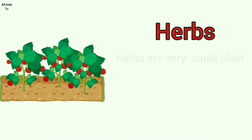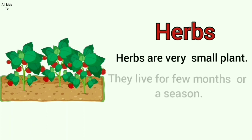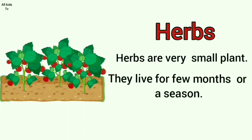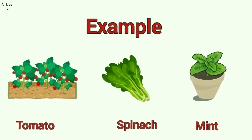Herbs. Herbs are very small plants. They live for a few months or a season. Therefore, they are called seasonal plants. Some examples of herbs are tomato, spinach and mint.